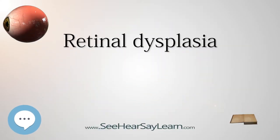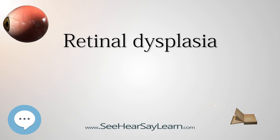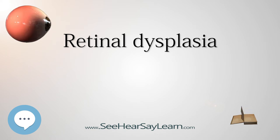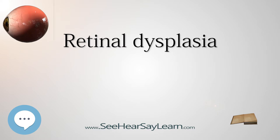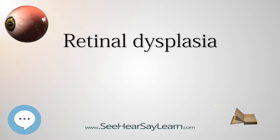Retinal Dysplasia is an eye disease affecting the retina of animals and, less commonly, humans. It is usually a non-progressive disease and can be caused by viral infections, drugs, vitamin A deficiency, or genetic defects. Retinal Dysplasia is characterized by folds or rosettes — round clumps — of the retinal tissue.